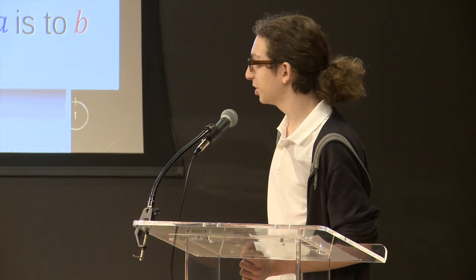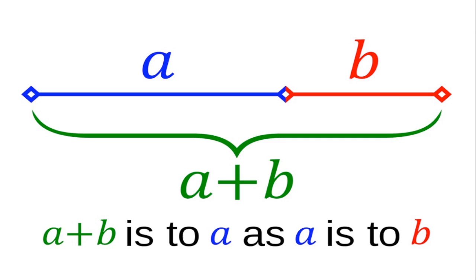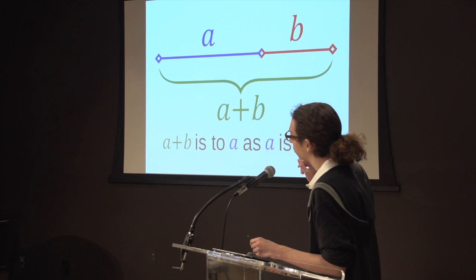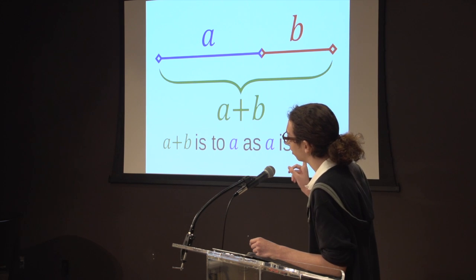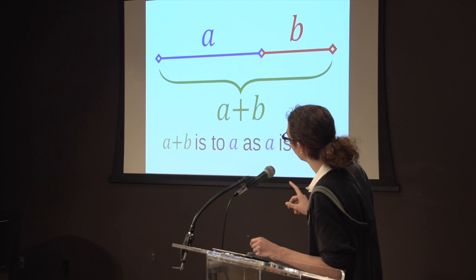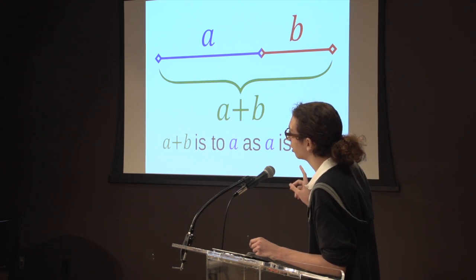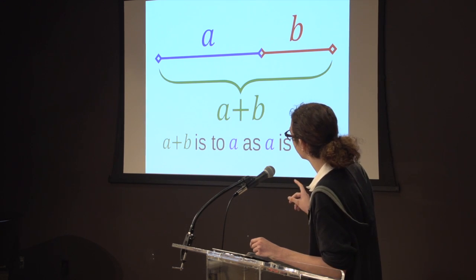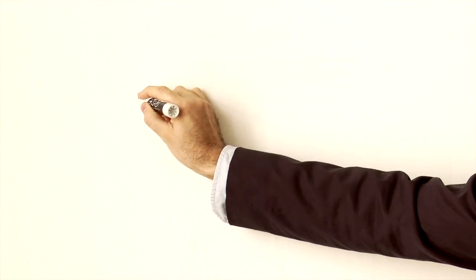We're going to switch gears and talk about some math — very fun. This is a little thing called the golden ratio. They figured out a long time ago in the ancient world — in Greece and Rome — that it is the most aesthetically and musically pleasing ratio in all of creation.